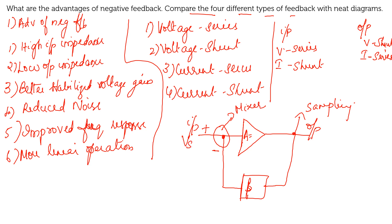For example, taking voltage: source voltage is Vs, amplifier voltage is Vi, feedback voltage is Vf, and output voltage is V0. Then Vi will be equal to Vs minus Vf, since it is negative feedback. These are the basic things you need to understand before going for the block diagram comparing the four different types of feedback topologies.